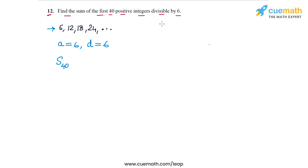We are going to use the formula S_n, the sum of n terms of an AP, is equal to n/2 times (2a + (n-1)d).